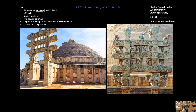The toranas are 35 feet high, and the North gateway is part of our image. It has two square columns that are all engraved, with elephants acting as the capitals at the top of these columns. The elephants hold up three architraves with scrolled ends, and the whole gateway is carved in high relief.